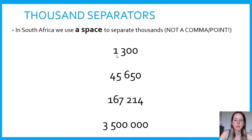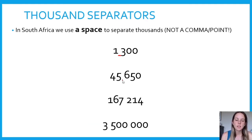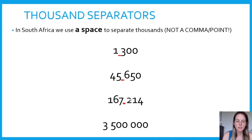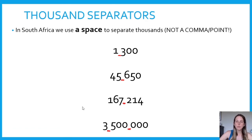Here you can see the first example is 1 300, with the space between the 1 and the 3. The next one is 45 650, and the space is between the 5 000 and the 600 place. The next one is 167 214, and the space is between the 1 000 and the 100 place. The last one is 3 500 000 — there's a separator between the 3 000 000 and the 500, and again between the 1 000 and the 100.